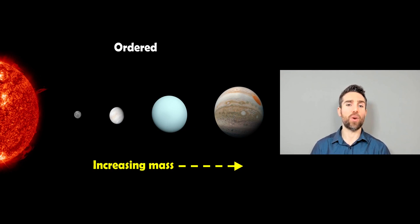So the first one is ordered, and what that means is you've got the smaller planets closest to the star, and as you go further away from the star, they get bigger. So there's an increase in mass in the planets as you increase distance.